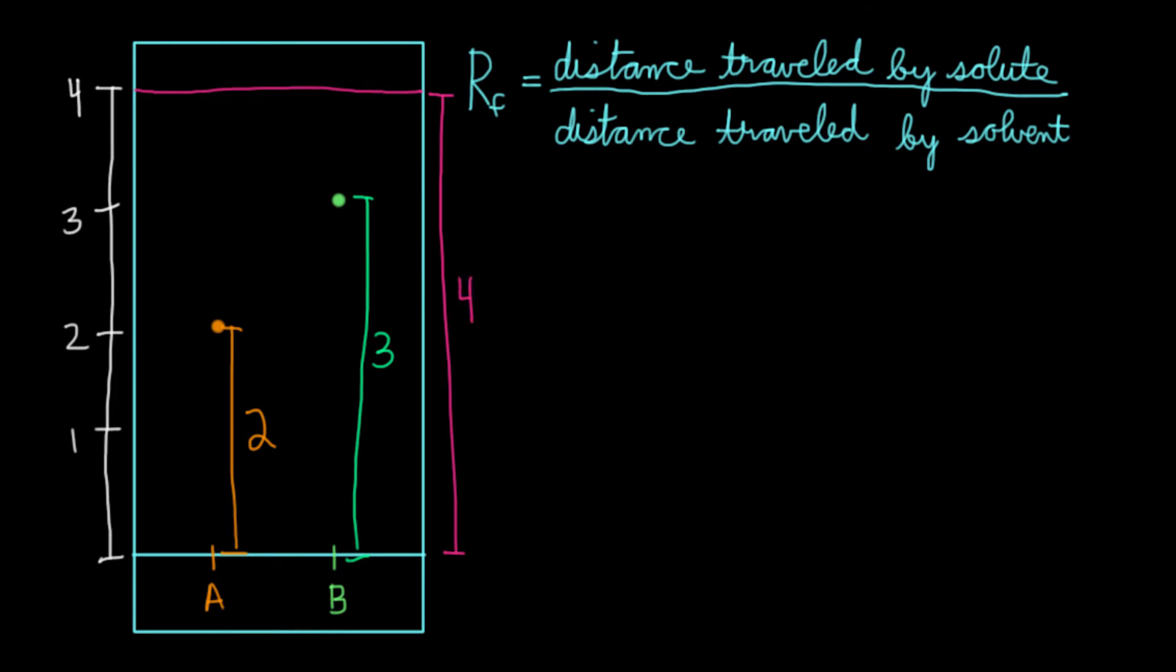So let's plug that into our equation. If we wanted to solve the RF of A, you need the distance traveled by compound A over the distance traveled by the solvent. So let's say A over S. Here, that would be equal to 2 over 4. And the convention is to report these values as decimal points, so we'll say that this is 0.5. Now we'll do the same for compound B. RF of B is equal to distance traveled by B over distance traveled by S. And in this case, that's equal to 3 over 4, or 0.75.